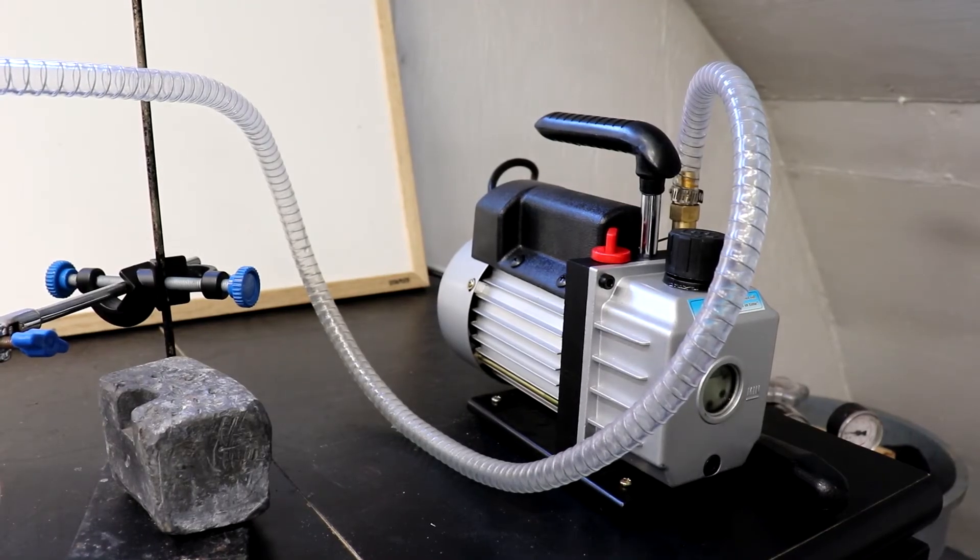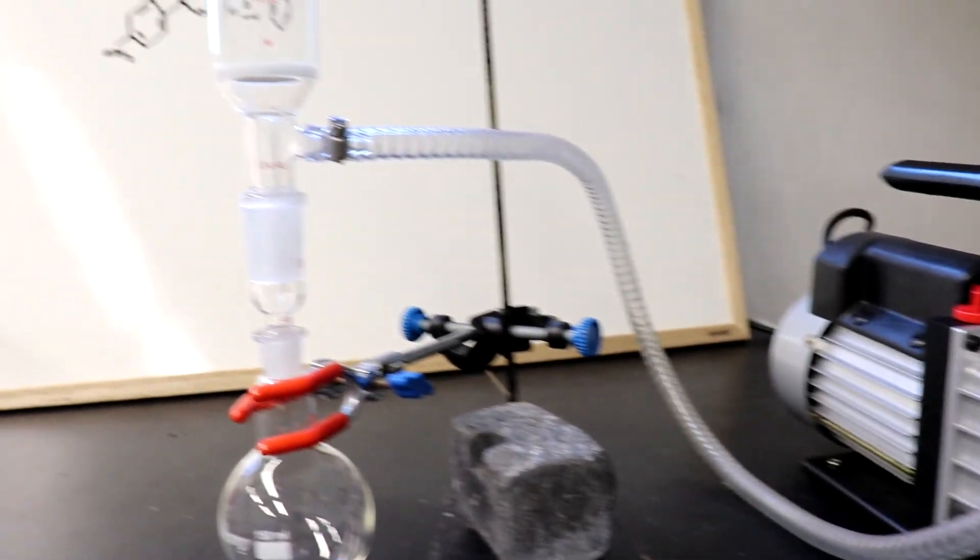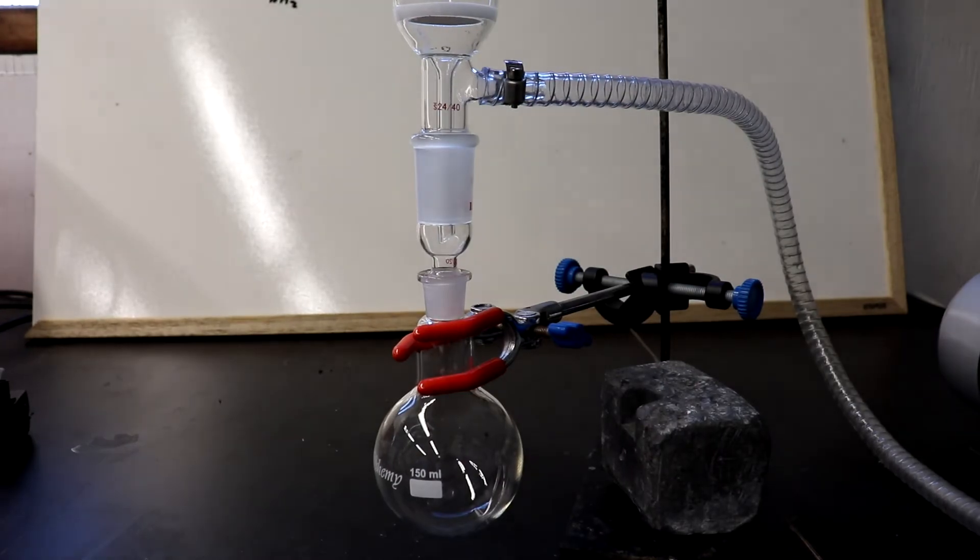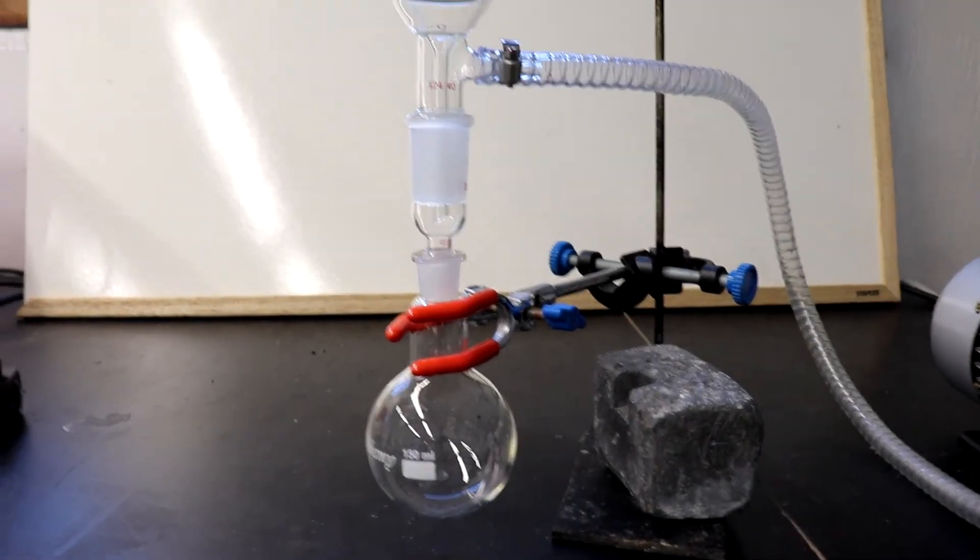So using this new vacuum pump I got, we're going to do a vacuum filtration with the Buchner funnel into our flask that we're going to then use to distill the aniline.